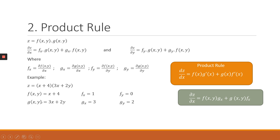The partial derivative of g with respect to x is 3, since the second element has no x and behaves like a constant. The partial derivative of g with respect to y is 2. For the final solution, the partial derivative of z with respect to x equals the partial derivative of f with respect to x multiplied by the original g, plus the partial derivative of g with respect to x multiplied by the original f. Expanding the brackets, the answer comes out as 2(3x + 2y) + 6, simplifying further to 6x + 2y + 6.